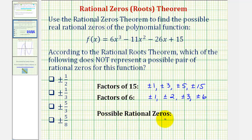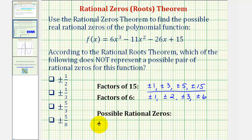All possible rational zeros must come from the unique rational numbers of the factors of 15 divided by the factors of 6. Starting with p = 1: we have plus or minus one over one, which is plus or minus one; plus or minus one over two, or plus or minus one-half; plus or minus one over three, or plus or minus one-third; and plus or minus one over six, or plus or minus one-sixth.